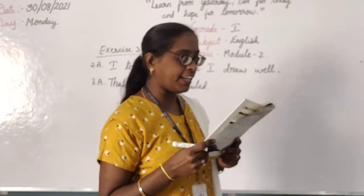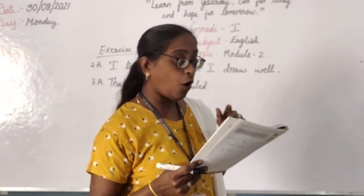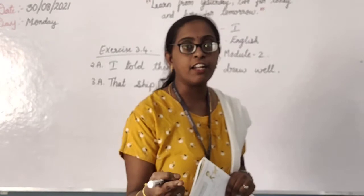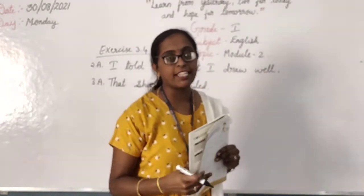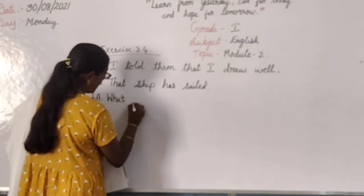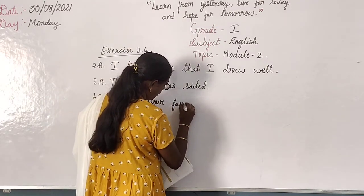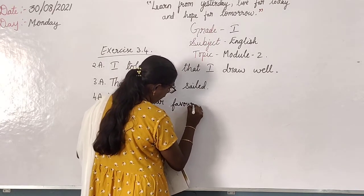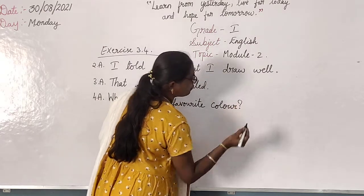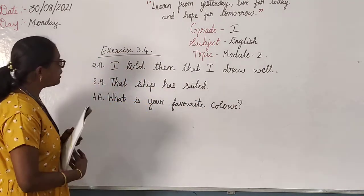Next, fourth question. What is your favorite color? Here capital letter they have not given. Instead of question mark they have given full stop. What is your color — we are asking the question. So we need to put question mark. Fourth answer — capital letter first. What is your favorite color? Question mark, not full stop. Because you are asking the question. Start with capital letter and put question mark.